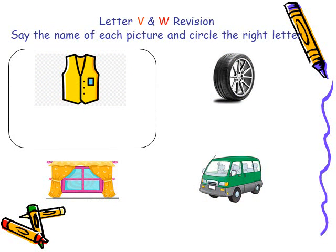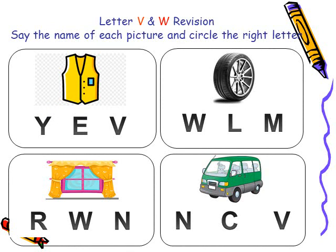Okay, now look at this picture. We have four pictures. Let's say the name of each picture, and after that we'll circle the right letter for each picture. Okay, look at the first picture — we have vest, another picture wheel, window, and van.